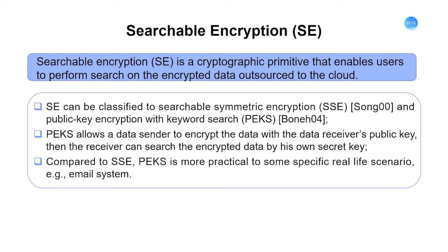SSE allows only private key holders to produce ciphertext and to create search tokens for search, whereas PEKS enables a number of users who know the public key to produce ciphertext, but allows only private key holders to create search tokens. Compared to SSE, PEKS is more practical for real-life scenarios, for example, an email system.